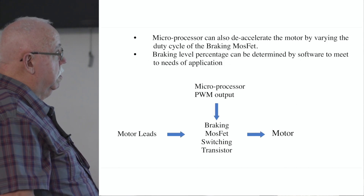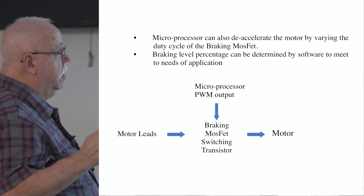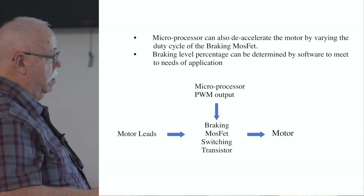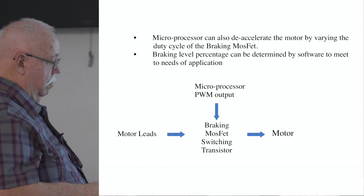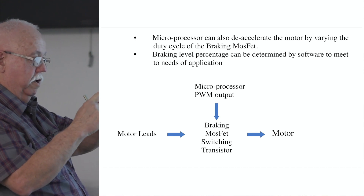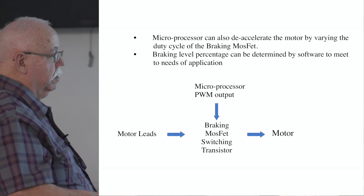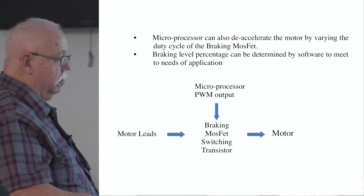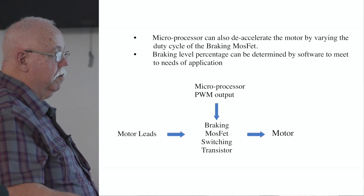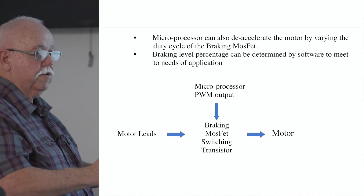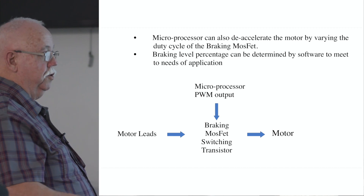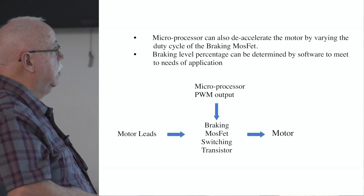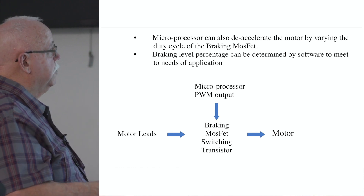We also use dynamic braking. We talked about shorting the motor leads together — we can do the same thing with this switch. You've got your motor leads going through a duty cycle to the motor, so you can have 10% braking, 20% braking, 50% braking, and you can adjust all that via the control.